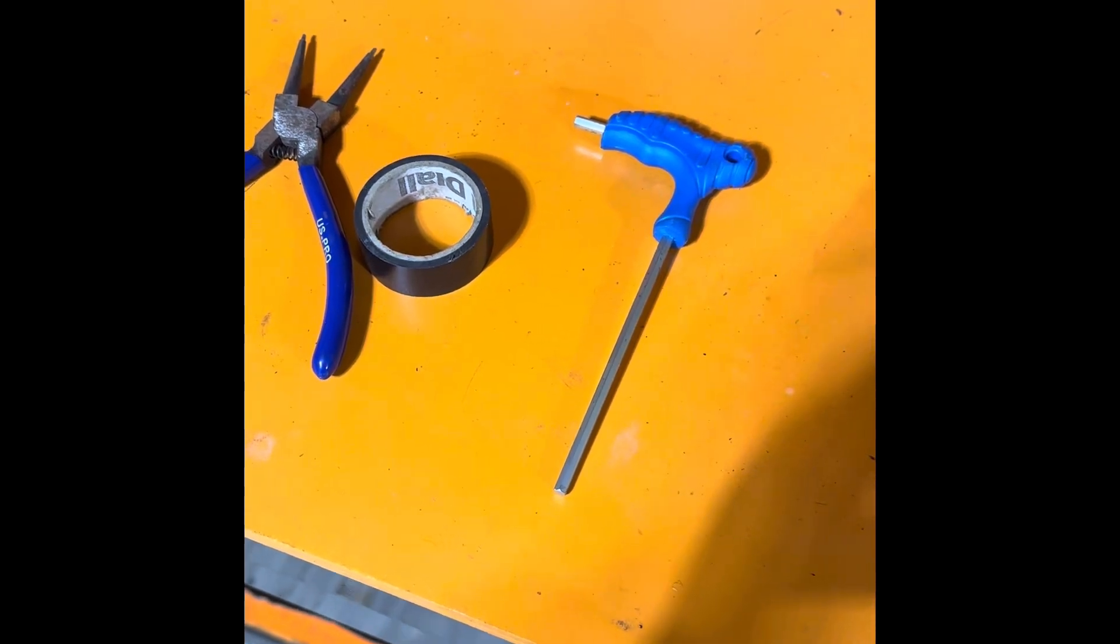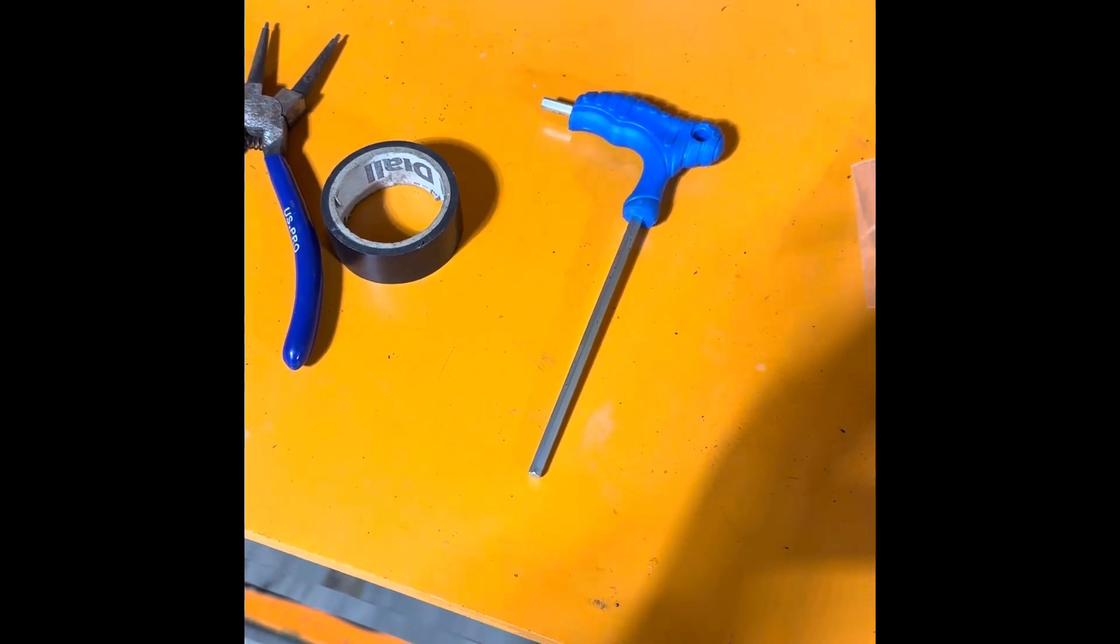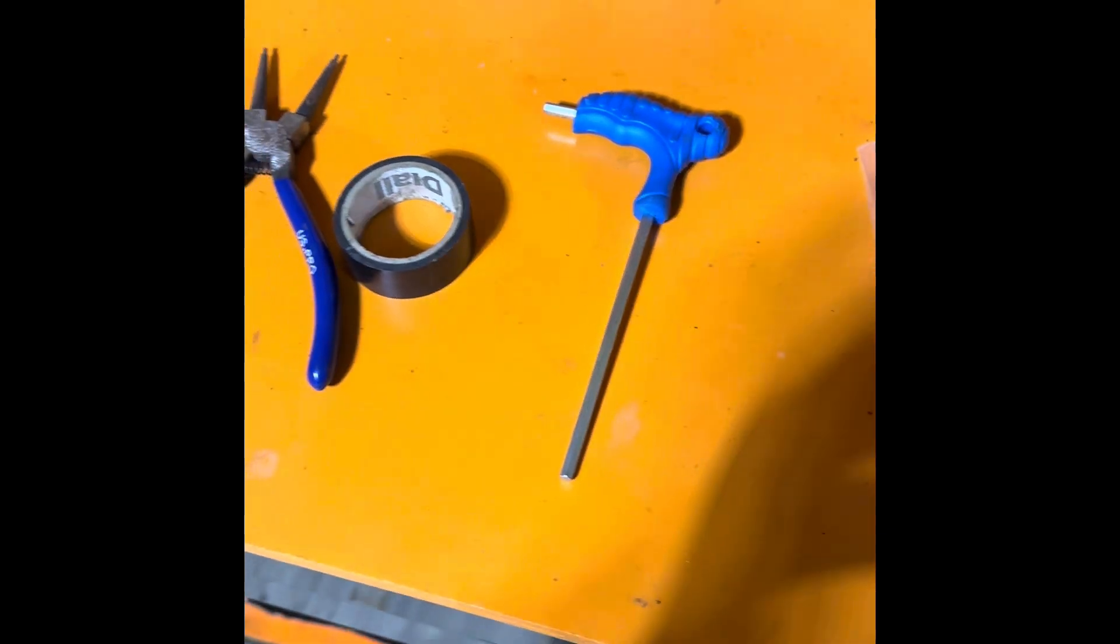This is a little video of how to take out your Di2 battery from your seat stem. So things you're going to need: